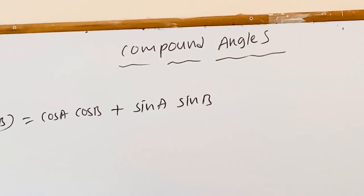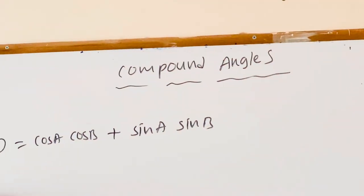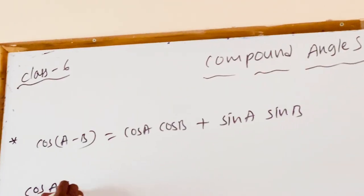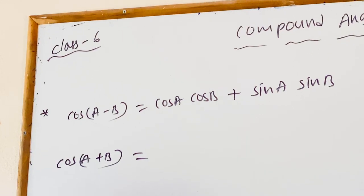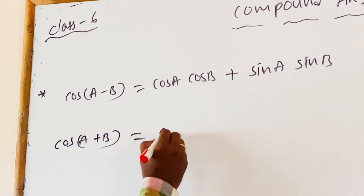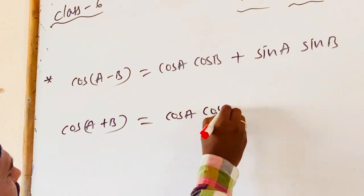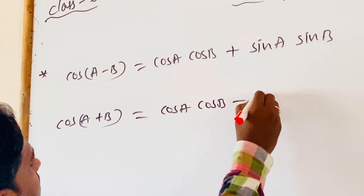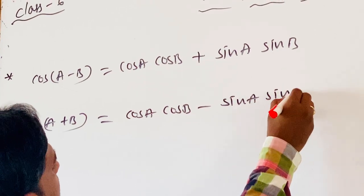In previous class, we discussed about the derivative of cos of A plus B, which gives us cos A cos B minus sin A sin B.